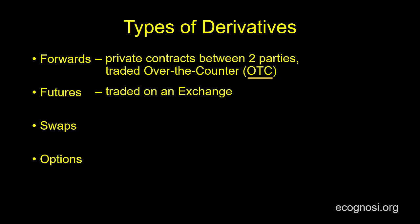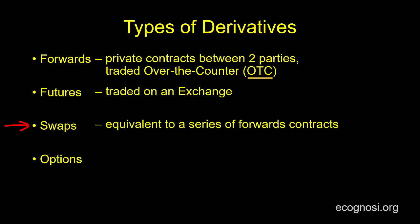Moving on to a third type of derivative — swaps — you can view this as equivalent to a series of forward contracts. Wait a minute, didn't we say that forwards and futures are conceptually the same thing? Then why did I specifically say that you can view swaps as a series of forwards? The reason is because swaps are mostly traded over the counter as private contracts between two parties, as was the case with forward contracts.